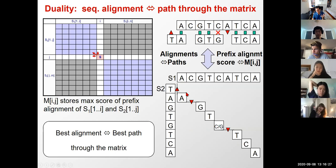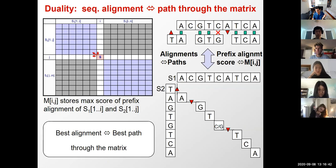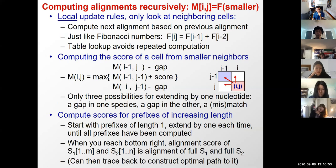By creating this dynamic programming matrix and tracing back, we search through the best path across all exponential possible solutions in quadratic time, which is polynomial — much much better than exponential. That's the difference between, say, three to the thousand versus a thousand squared. A thousand squared is a million; three to the thousand is astronomically larger.